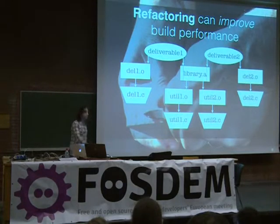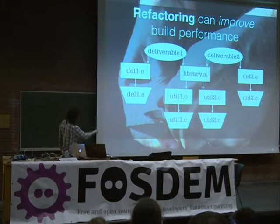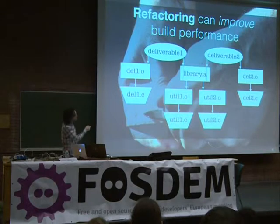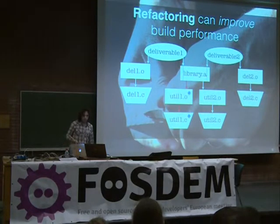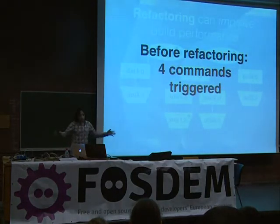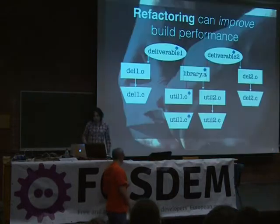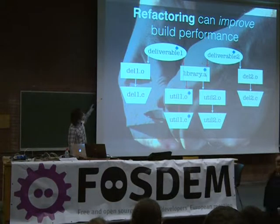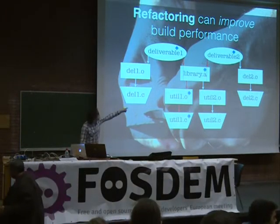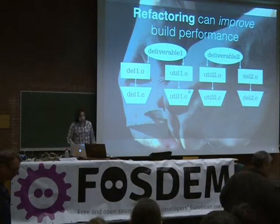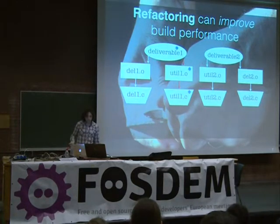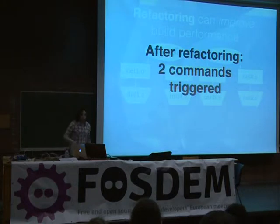One example of improving your software projects is to use refactorings. If we imagine a simple project made up of four C files compiled into objects, libraries, and two deliverables, we'll notice that some builds would be slower than others. For example, if we change a utility file at the bottom, it would trigger a recompilation, a re-archive, and then two relinks — triggering four commands before refactoring. If we see that deliverable 1 is the only one using util1.c and deliverable 2 just discards it at link time, we can refactor so a change to util1.c only triggers two commands, saving time in the long run.